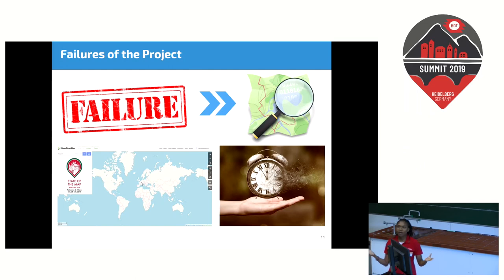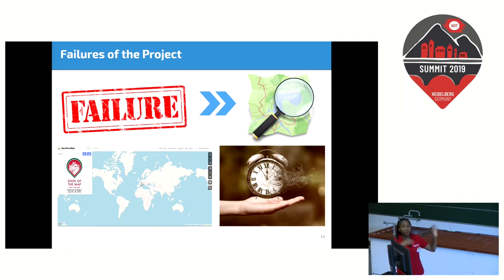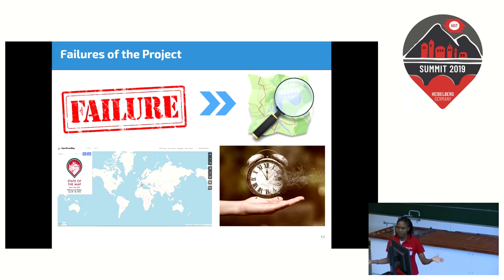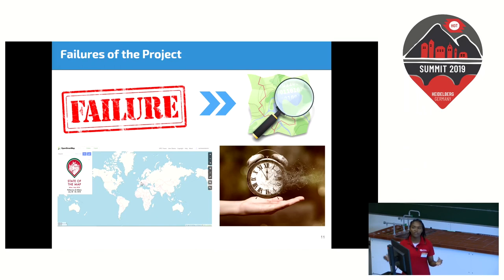We also faced some challenges and failures. Despite uploading more than 5,000 points to OSM, we were not very successful in finding a single tag to clearly show responders whether a point is affected by floods or not. We are also yet to fully develop the capacity of the community and government to move this project forward and respond on their own.